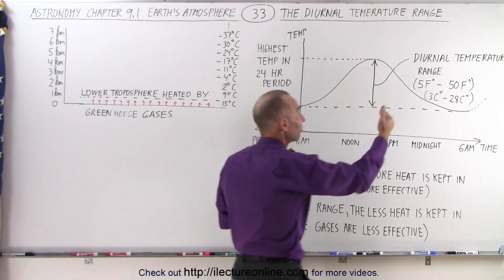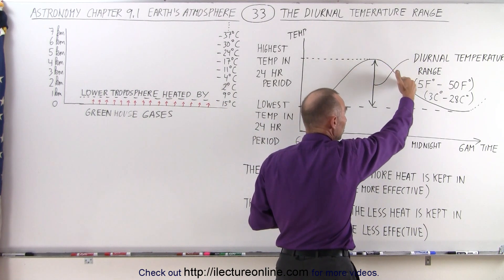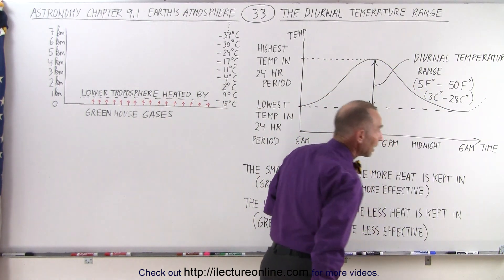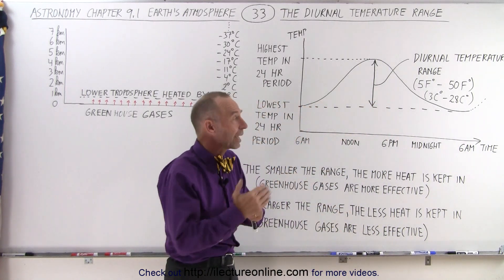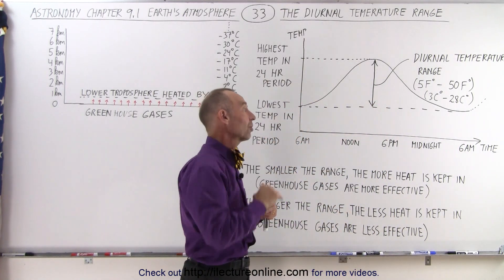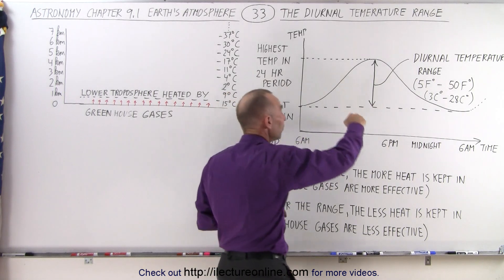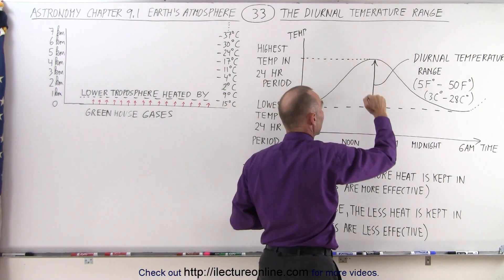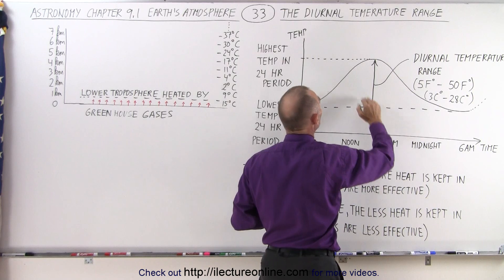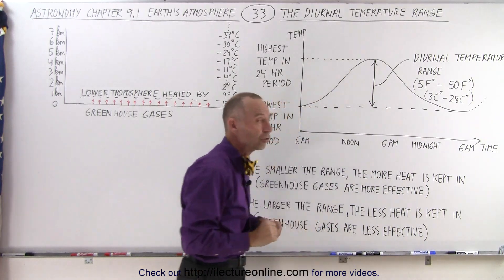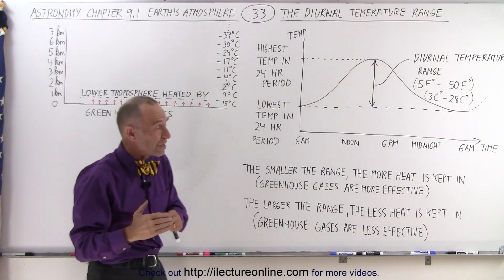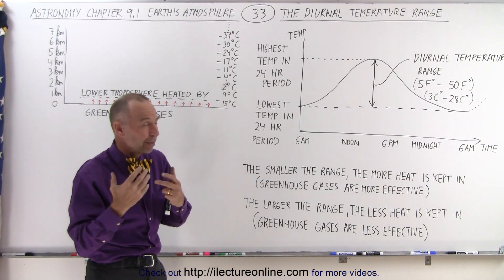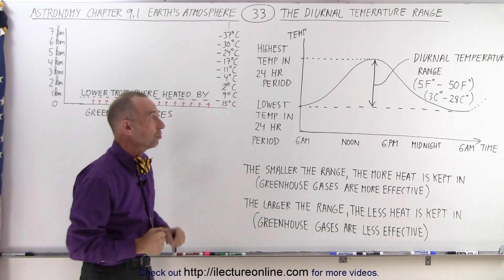After the sun sets, that process continues, and eventually, when we get to about 6 o'clock of the next day, we reach the lowest temperature again, and then the sun rises and it starts all over again. The difference between the highest temperature during the daytime and the lowest temperature during the nighttime is called the diurnal temperature range, and it turns out that can be a very small number or a very big number, so there are some very big factors affecting that range.